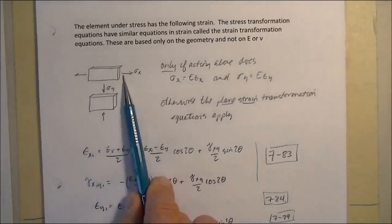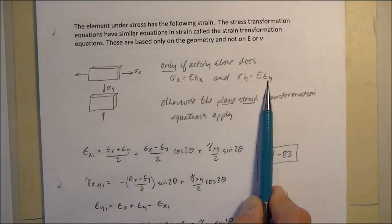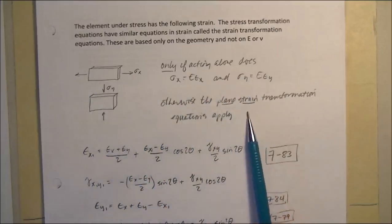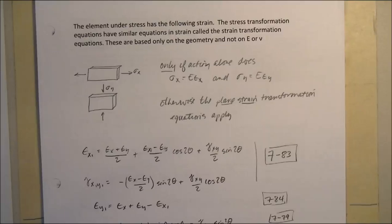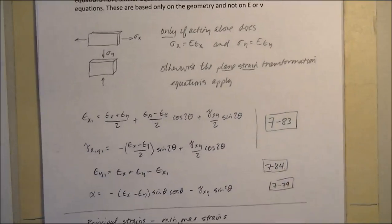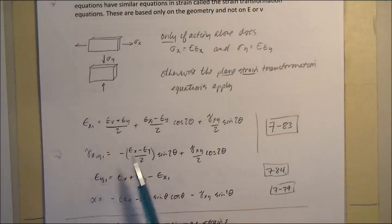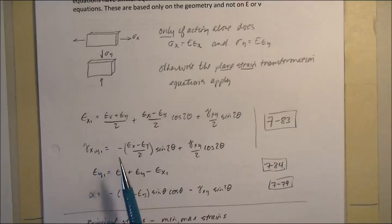Here's an element under stress. We know that if stresses act alone, Hooke's law in that direction applies and we'll get strain if we have stress in one direction. However, if we have multiple stresses and also stress in the z direction, the plane strain transformation equations apply. These were developed in the book and are repeated here as a way to predict what the strain will be in the x and y directions. Strain in z is equal to zero, and we'll also have some shear strain on a particular axis.